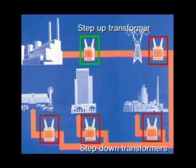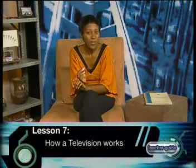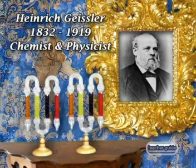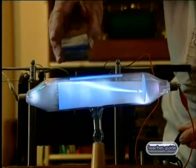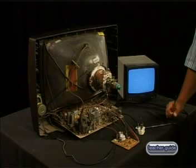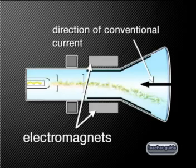We then see how transformers are used to distribute electricity from a power station across the country to our homes. In our final lesson, we investigate how a television works. We look back in history at the work of Geissler, Crookes, and Braun to show how a stream of particles will be affected by a magnetic field. We also examine the components of a modern television to show how the many different aspects of electromagnetism link together in one device. Please note that a television should never be opened up without the assistance of a qualified technician or engineer, as television sets operate on high voltage and contain components that store charge even when disconnected.